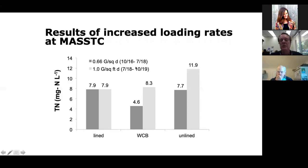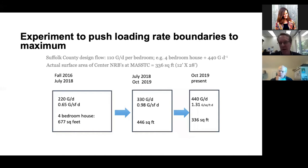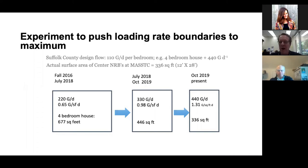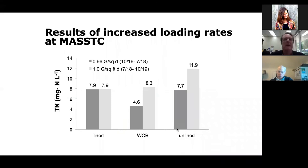We're recommending to engineers and regulators that for lined systems and wood chip systems, you size and design based on one gallon per square foot per day. If it's an unlined system, design it based on 0.75 gallons per square foot per day. When you try to load these drain fields above 1.3 gallons per square foot per day, you reach the hydraulic capacity of these systems and begin to get ponding of water. So none of our systems should go above one gallon per square foot per day with the current design configurations.